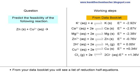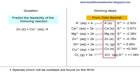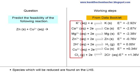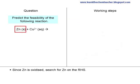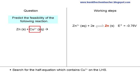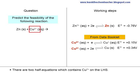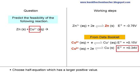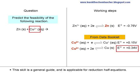From your data booklet, you will see a list of reduction half equations. Species which will be oxidized are found on the right-hand side. Since zinc is oxidized, search for zinc on the right-hand side and write the half equation which contains zinc on the right-hand side. Then search for and choose the half equation which contains copper-2-plus on the left-hand side, selecting the one with a larger positive value. This implies that copper-2-plus is more likely to be reduced to copper. This is a general guide applicable for reduction half equations.